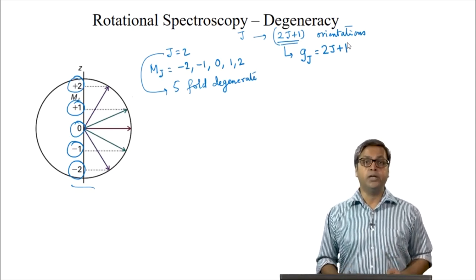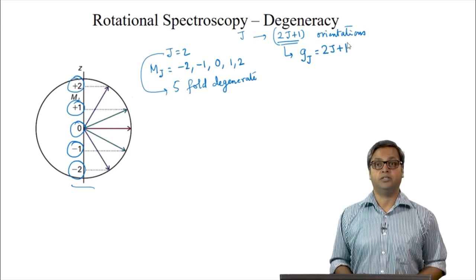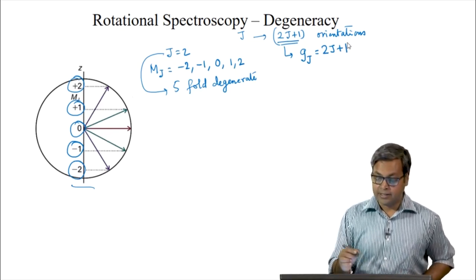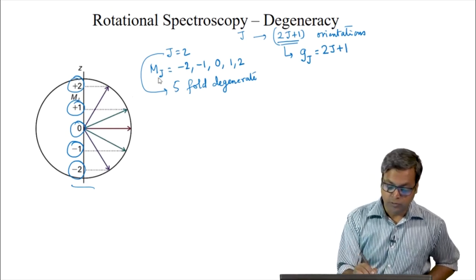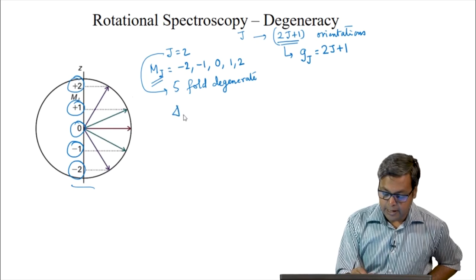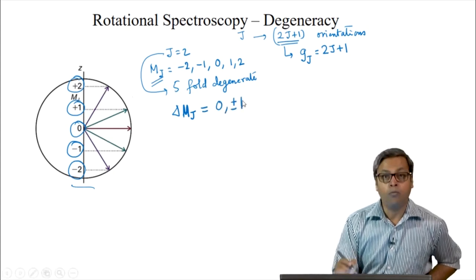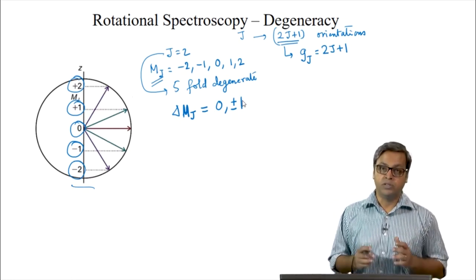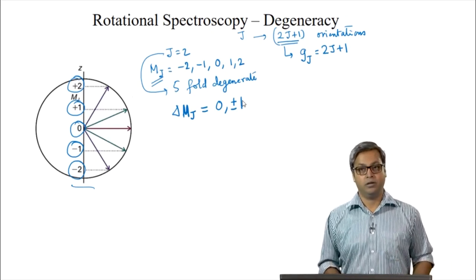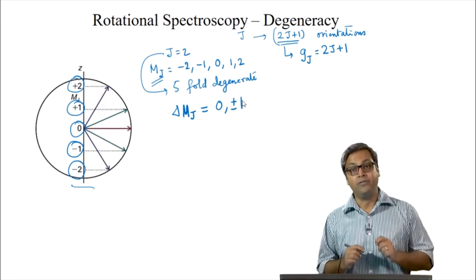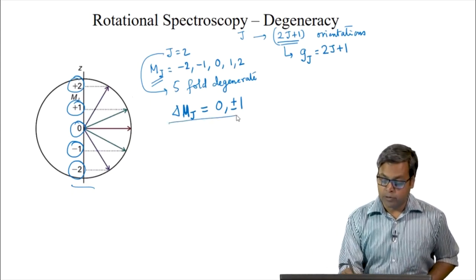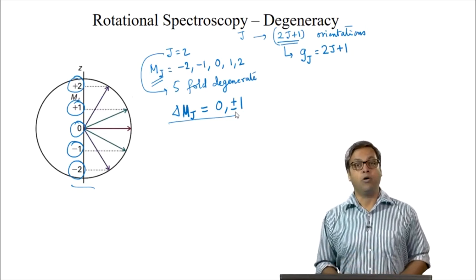Today, we will start by looking into the consequences of space quantization. There is an additional selection rule associated with mj, and this additional selection rule is given by delta mj equals 0 or plus minus 1. That means the change in the mj quantum number must be equal to 0 or plus minus 1. However, as the energy of the rotational level does not depend on the quantum number mj, this selection rule has no effect on the rotational spectrum.